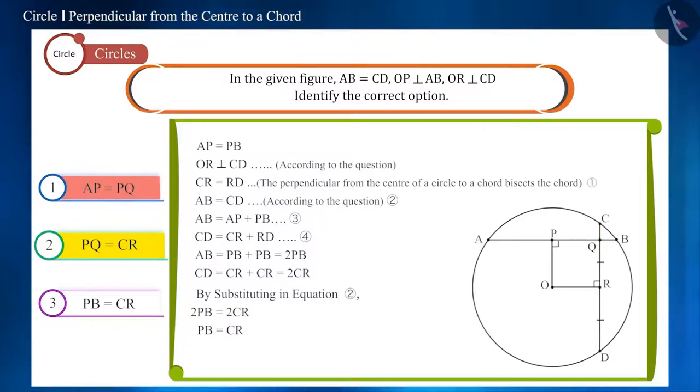In the figure, you can see that point Q is located on PB. That is, PQ is smaller than PB. Therefore, PQ cannot be equal to CR. This means this option is also incorrect.